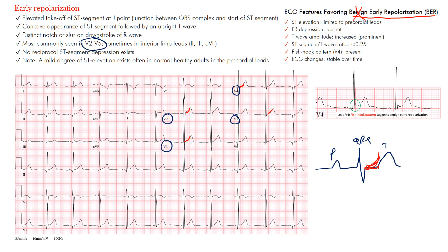So what you're looking for is concave ST segment elevation — not flat or downsloping, but a concave, upsloping shape into an upright T wave. That's the key morphology to identify.